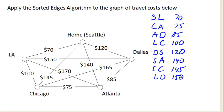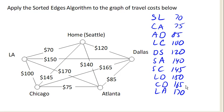Chicago to Dallas with a cost of 165. And LA to Atlanta with a cost of 170. Hopefully that's all of them.